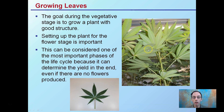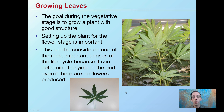Growing our cannabis leaves, the goal is to provide not only quality leaves but also quality structure to the plant. This sets the plant up for the flowering stage that comes after the vegetative state. This can be considered one of the most important phases of the life cycle because you can determine the yield in the end. Even though there are no flowers produced, if you treat plants poorly in the vegetative state, they will have poor flower production because they're not well-prepared to go under the stresses of producing flowers.